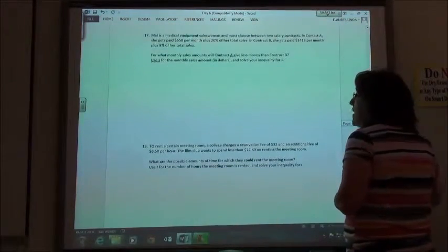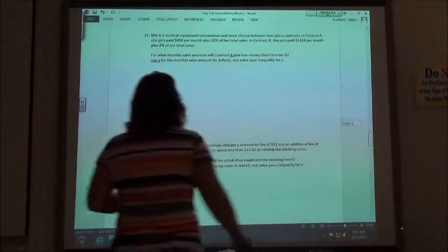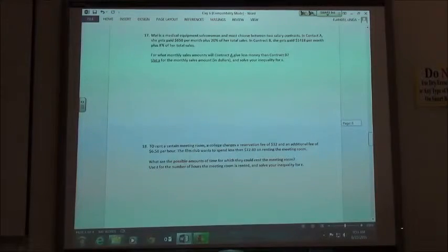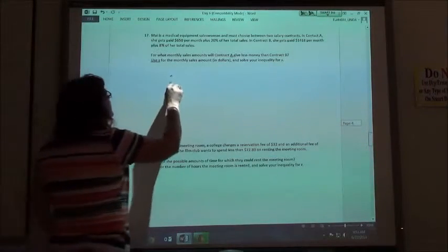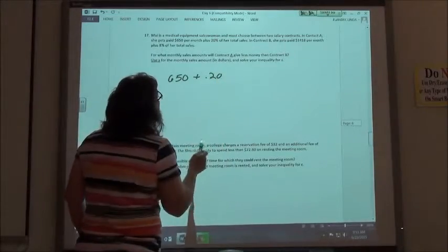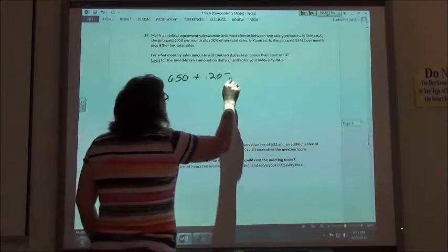So number 17, Ma is a medical equipment saleswoman and must choose between two salary contracts. In contract A, she gets paid $650 a month plus 20% of her total sales. We're going to use S for the sales.